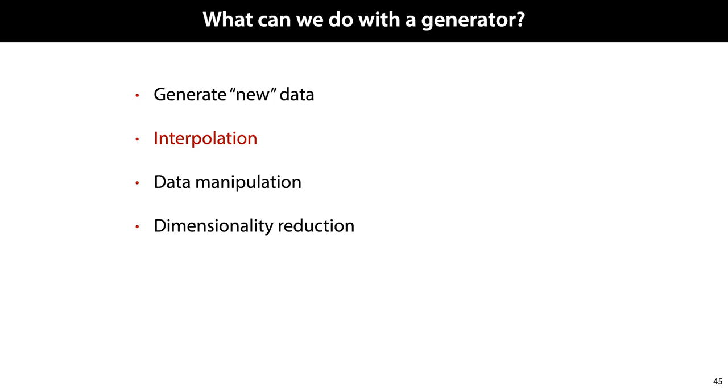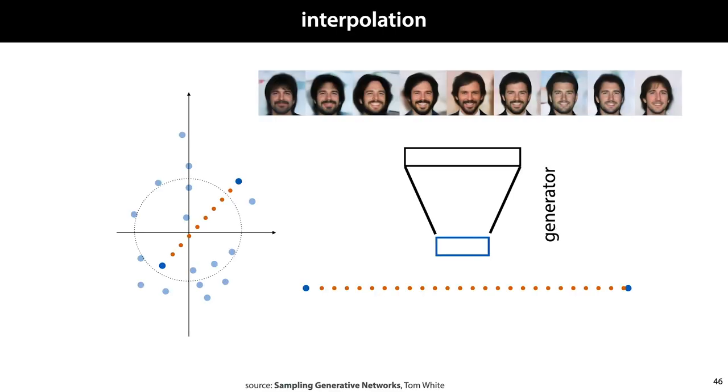The first thing we can do, of course, is sample points that look like they came from the same distribution as our data. But another thing we can do is interpolation.